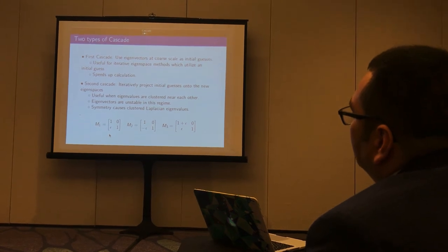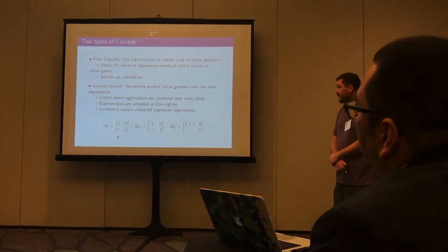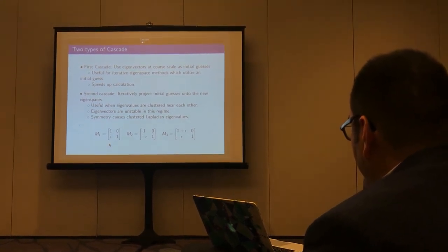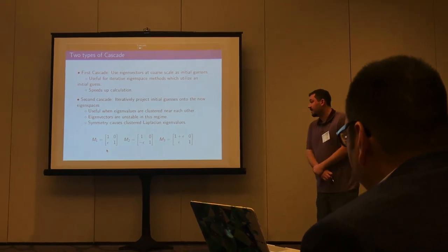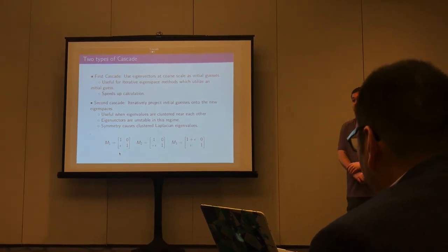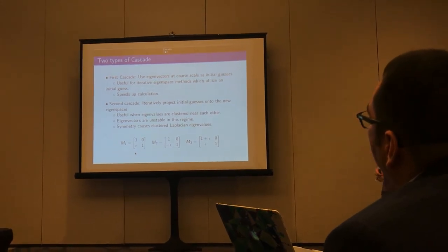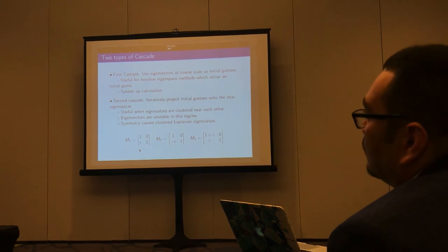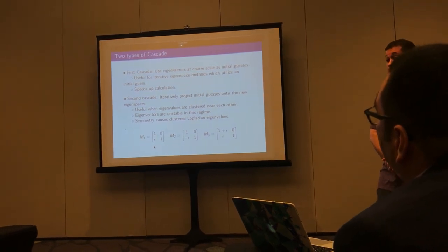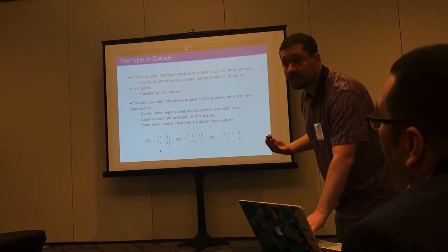A motivating example illustrates eigenvector instability: three matrices in R2 that are arbitrarily close (differing only by epsilon, which can be made arbitrarily small) can have eigenvectors that rotate all the way around — ranging from (1,0)/(0,1) to (1,1)/(1,-1). This instability arises because the eigenvalues are very close to one another, i.e., they cluster together. This is why second cascade is needed to relate these bases.